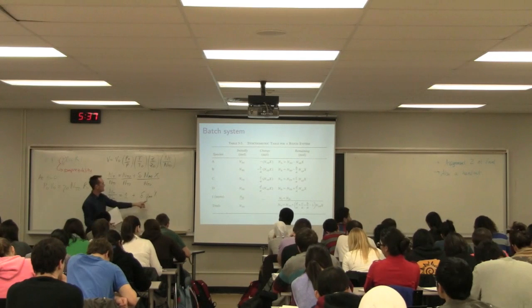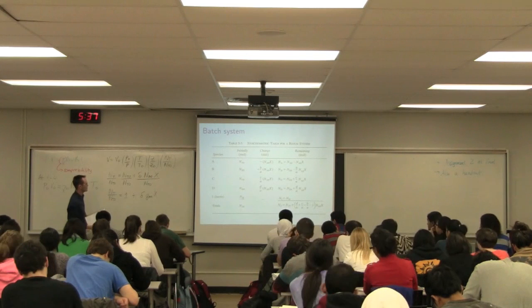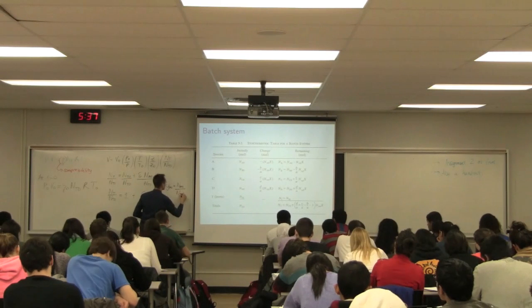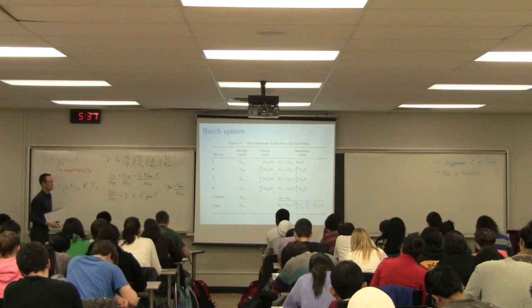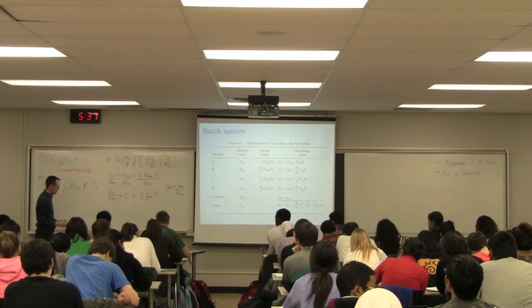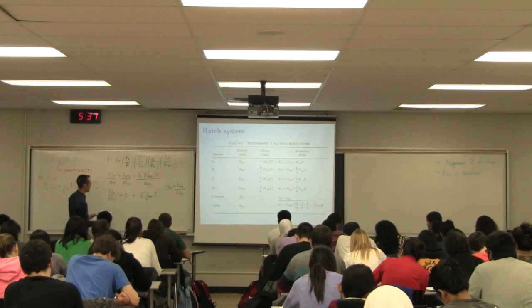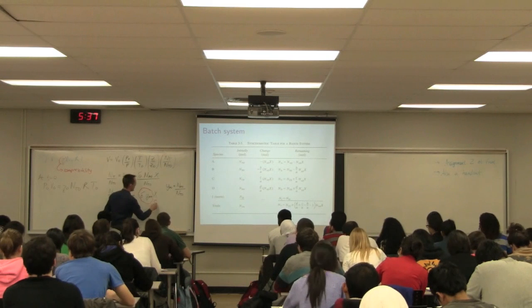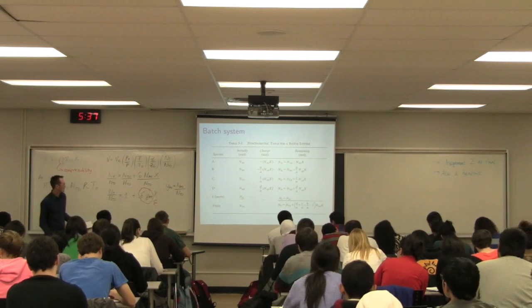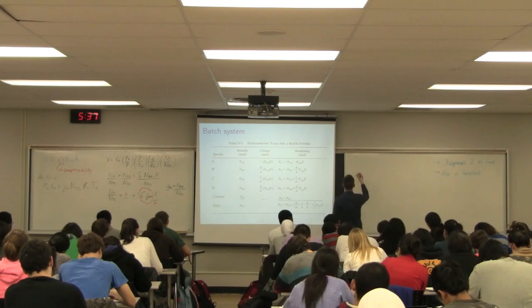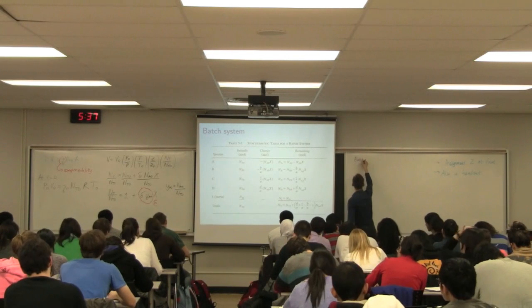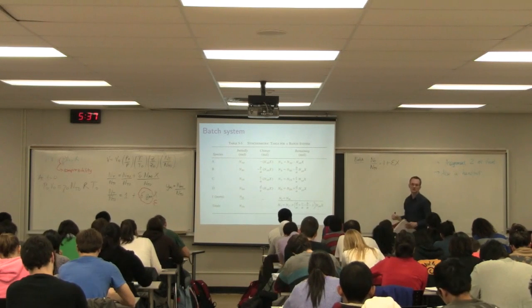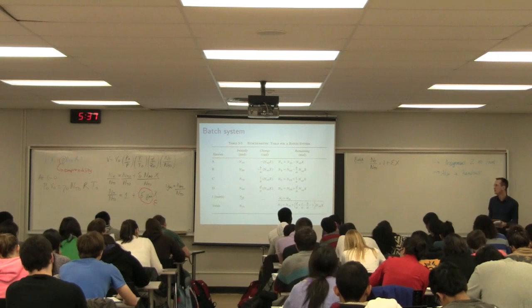Another simplification: I'm going to call the term δ × Y_A₀ by the symbol epsilon (ε). So we have N_T/N_T₀ equal to 1 plus ε × X. We're going to see this term (1 + εX) repeatedly.